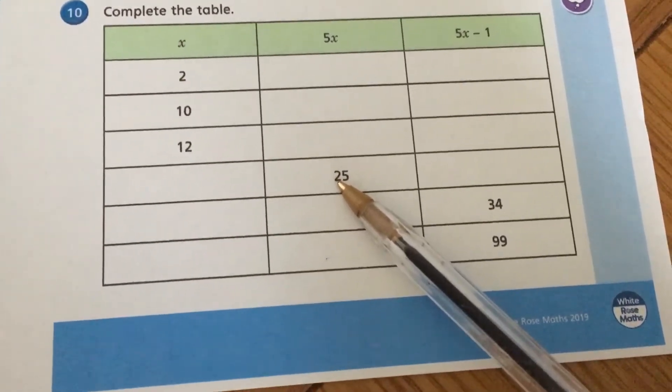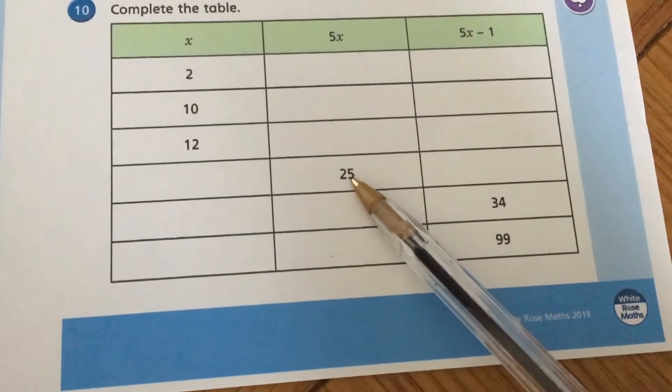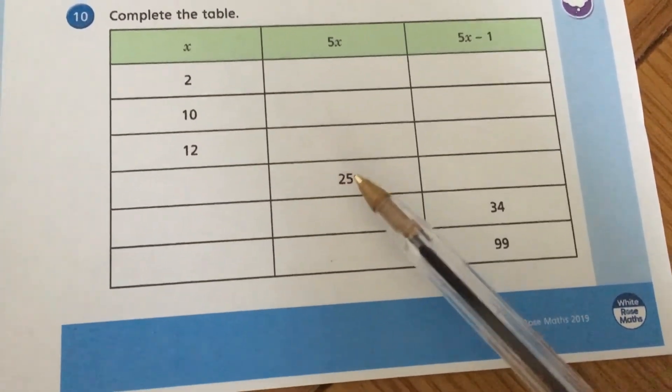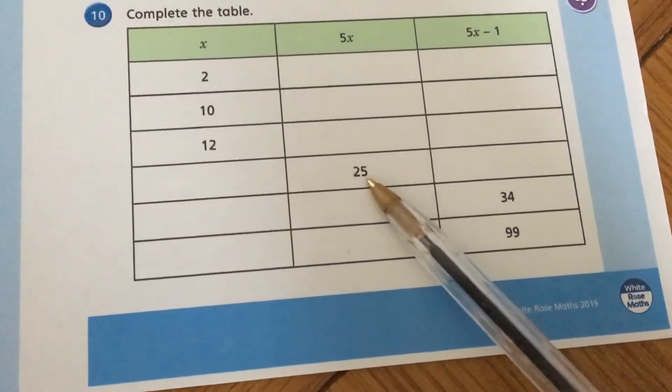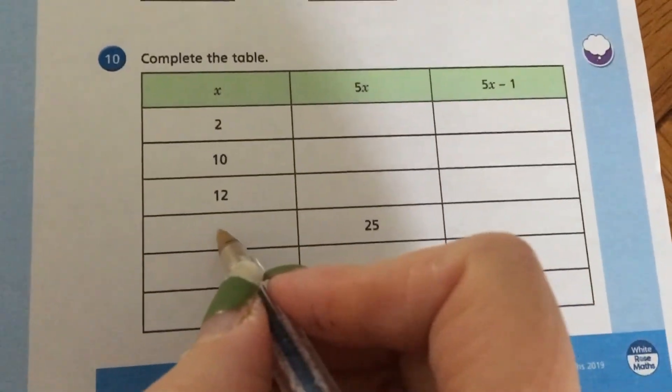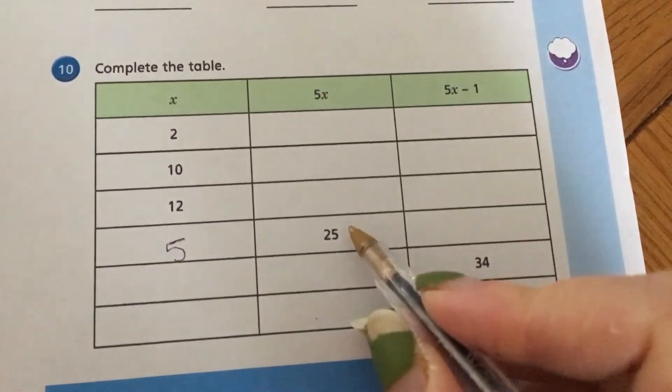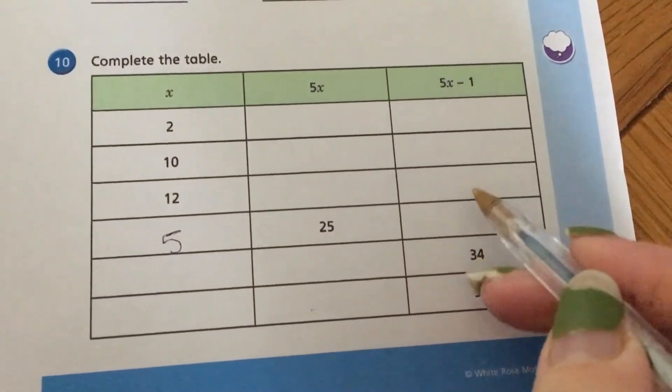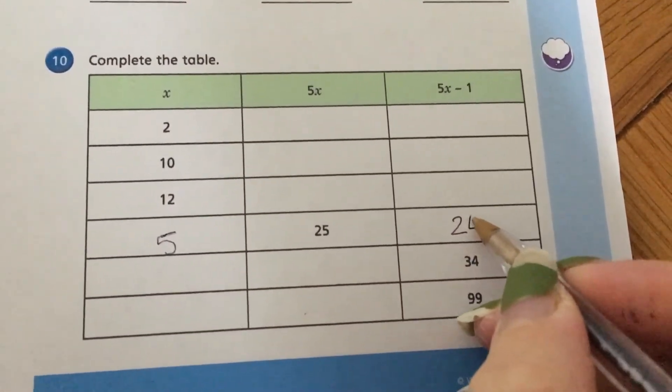So thinking here, 25 is 5 lots of x, so that's 5 times x. So I need to do the inverse, the opposite, to find out what x is. So I've got to divide 25 by 5 to find out what x is. So hopefully we can see that's 5. Here, we already know that 5x is 25, so I've just got to follow it and take away 1, which gives me 24.